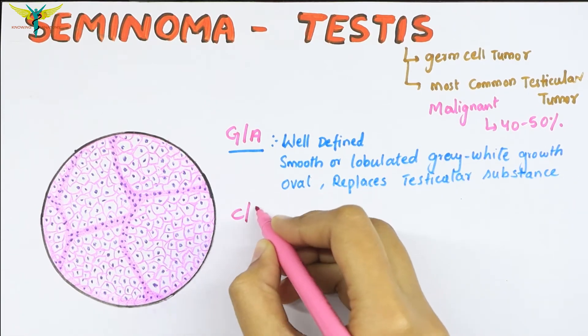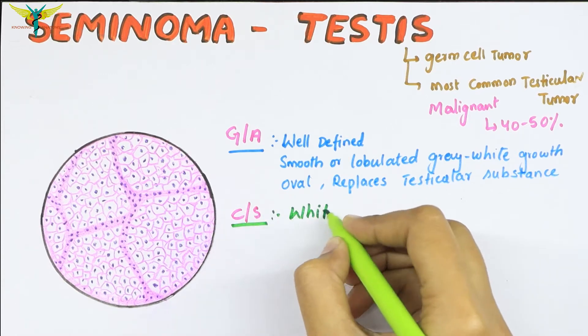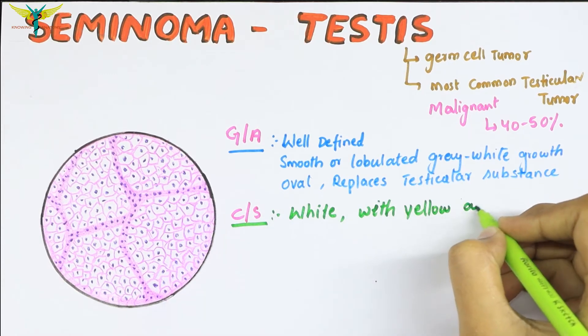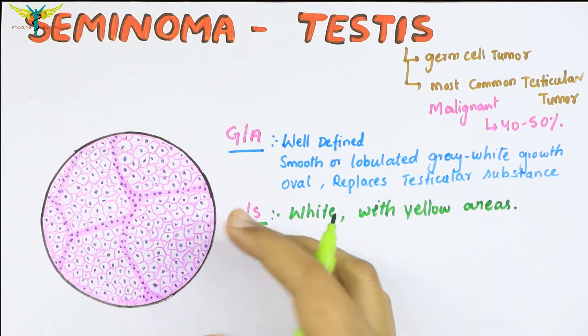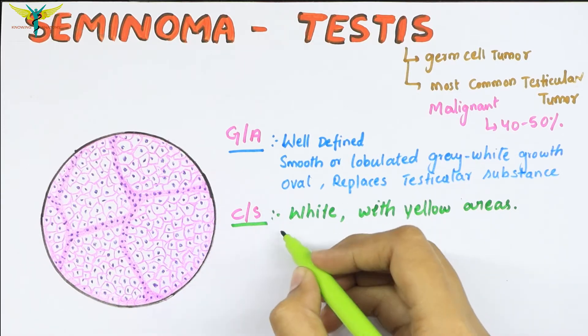In the cross section it looks white with yellow areas, and rarely the ischemic necrosis and hemorrhages are also seen.